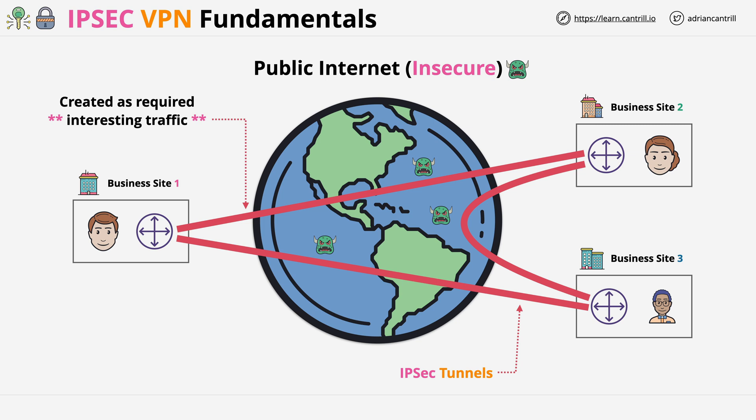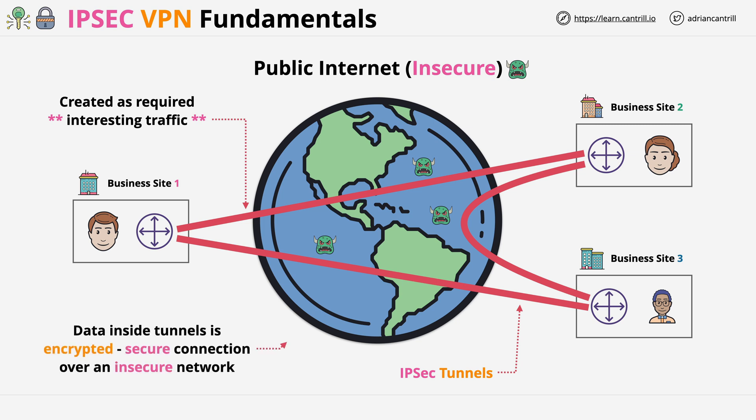If there's no interesting traffic, tunnels are eventually torn down, only to be re-established when the system next detects interesting traffic. The key thing to understand is that even though those tunnels use the public internet for transit, any data within the tunnels is encrypted while transiting over that insecure network — it's protected.